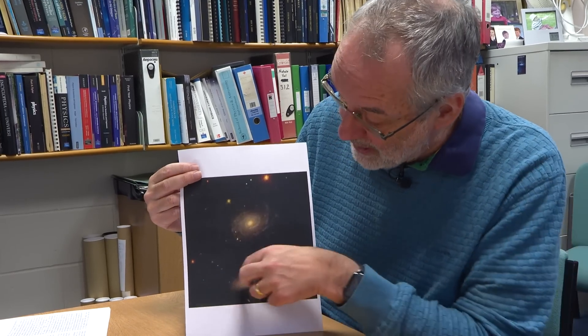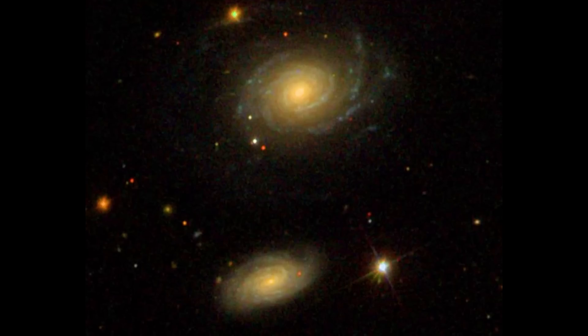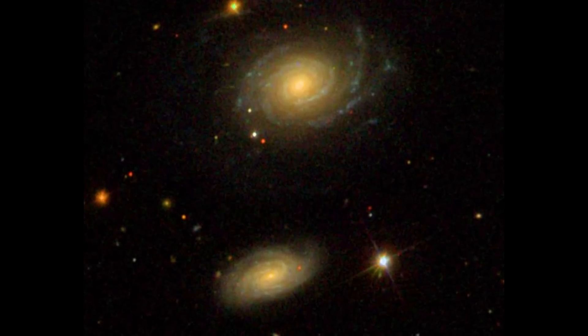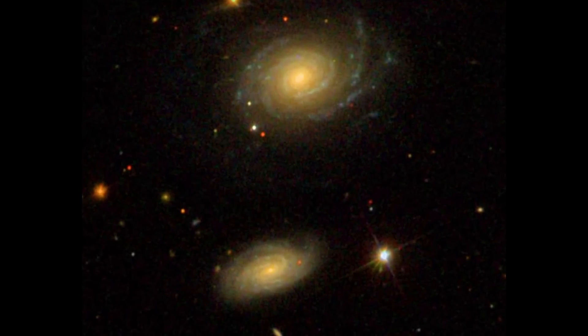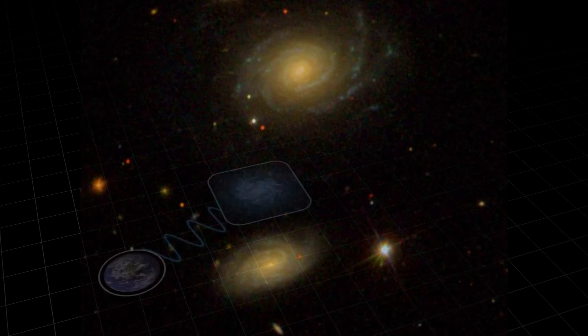Your intuition might tell you that NGC 2 is further away because it's smaller, but of course not all galaxies are the same size — it could be a small galaxy much closer to us, or a little bit smaller than NGC 1 at the same distance. So we need some other way of figuring out what the distances to galaxies are.